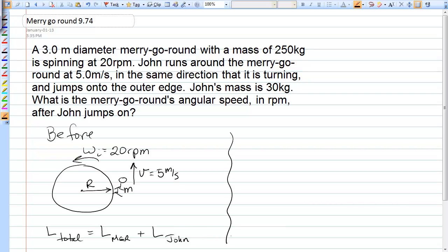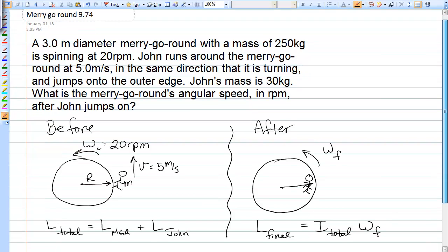Now after, when John jumps on the merry-go-round, he now contributes to the moment of inertia of the system, but the whole thing is now traveling at a common angular speed, omega F. And the final angular momentum would be I of both John and the merry-go-round times that final angular velocity.